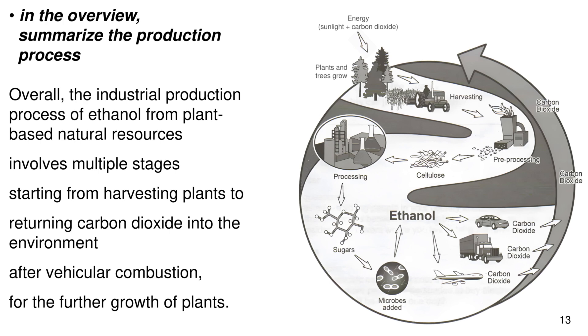Now in the overview, summarize the production process. Overall, the industrial production process of ethanol from plant-based natural resources involves multiple stages, starting from harvesting plants to returning carbon dioxide into the environment after vehicular combustion for the further growth of plants.